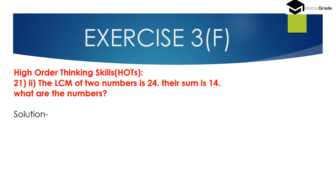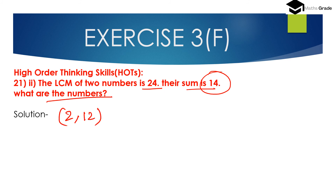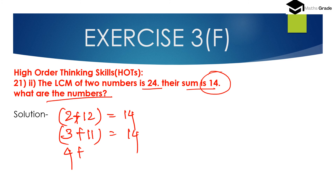Question number 21, second bit: 'The LCM of 2 numbers is 24 and their sum is 14. What are the numbers?' We need to find pairs that sum to 14: 2 and 12, 3 and 11, 4 and 10, 5 and 9, 6 and 8, 7 and 7. We will check which pair also satisfies LCM equals 24.